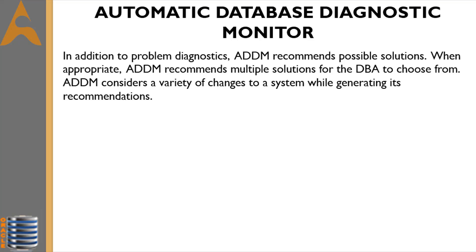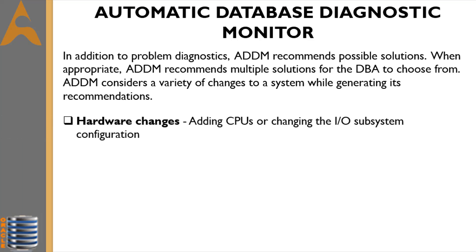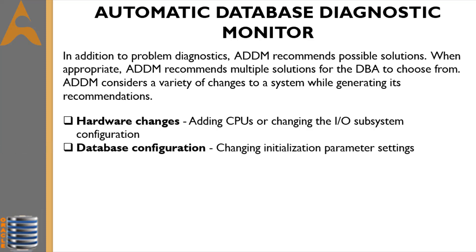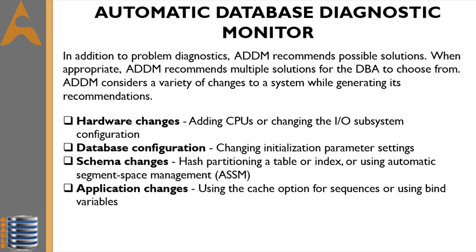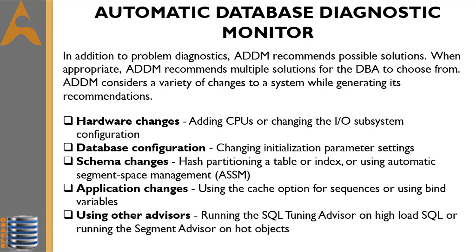In addition to problem diagnostics, ADDM recommends possible solutions. When appropriate, ADDM recommends multiple solutions for the DBA to choose from. Recommendations include: hardware changes such as adding CPUs or changing the I/O subsystem configuration; database configuration changes to initialization parameter settings; schema changes such as hash partitioning a table or index, or using Automatic Segment Space Management (ASSM); application changes such as using the cache option for sequences or using bind variables; and using other advisors like the SQL Tuning Advisor or Segment Advisor.